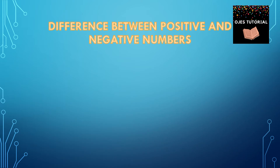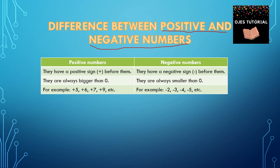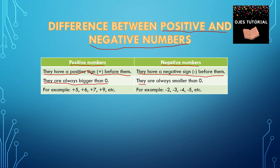Now, let's learn the difference between positive and negative numbers. This is a table which explains the difference. The first difference: positive numbers have a positive sign before them and negative numbers have a negative sign before them. The second difference: positive numbers are always bigger than 0, and negative numbers are always smaller than 0.